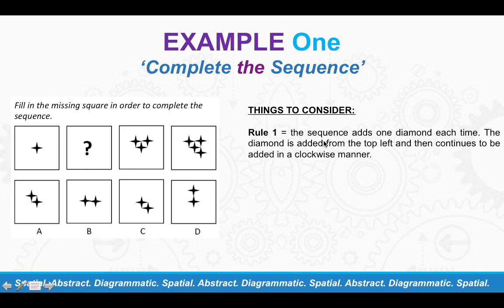So you would need to consider the following thing. Rule one, the sequence adds one diamond each time. The diamonds are being added from the top left and continues to be added in a clockwise manner. So you should be able to see we've got the first diamond there. So you're missing that one. So let's see how it changes in box three.